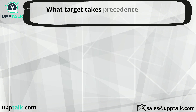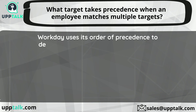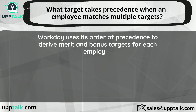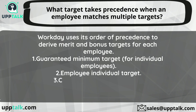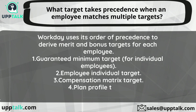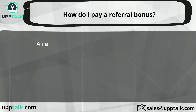What target takes precedence when an employee matches multiple targets? Workday uses its order of precedence to derive merit and bonus targets for each employee: 1. Guaranteed minimum target for individual employees. 2. Employee individual target. 3. Compensation matrix target. 4. Plan profile target. 5. Plan default.